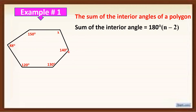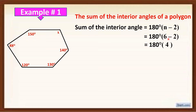Count the number of sides in this figure: 1, 2, 3, 4, 5, 6 — so there are 6 sides. We are going to substitute 6 for n. So we will have 180 degrees times (6 minus 2). Simplify inside the parenthesis: 6 minus 2 is equal to 4. So we have 180 degrees times 4, which is equal to 720 degrees. Therefore, the sum of the interior angles of this polygon is 720 degrees.